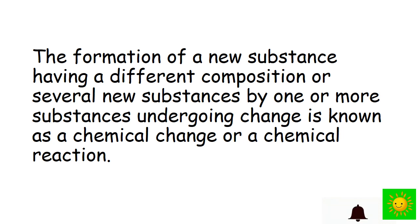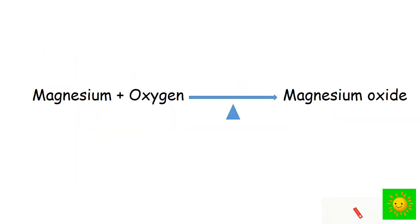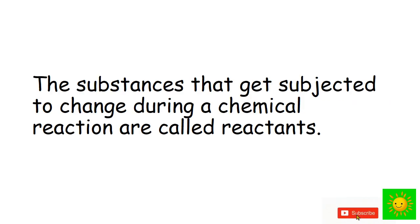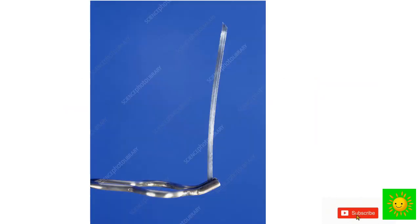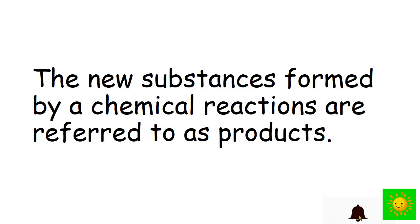The formation of a new substance having a different composition or several new substances by one or more substances undergoing changes is known as a chemical change or chemical reaction. Recall the burning of magnesium. Magnesium is a metal with silver luster. Upon heating, it combines with oxygen in the air and forms a white powder known as magnesium oxide. The substances that get subjected to change during chemical reaction are called reactants. The reactants of the above reaction are magnesium and oxygen. The new substances formed by chemical reaction are referred to as products. The product of this reaction is magnesium oxide.